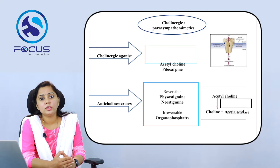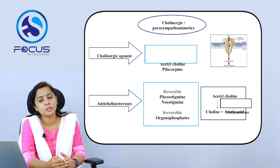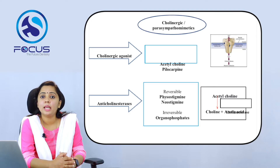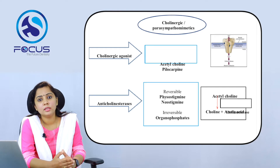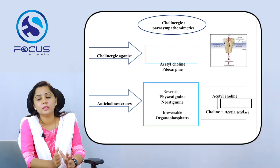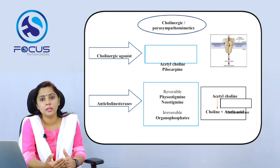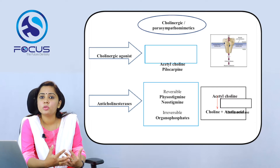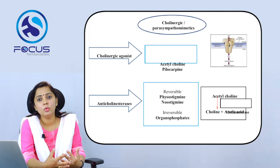The second group is the anticholinesterases. Anticholinesterases inhibit the action of the cholinesterase enzyme — the enzyme which breaks down acetylcholine into choline and acetic acid. Once the cholinesterase enzyme is inhibited, acetylcholine remains available for action. There are two types: reversible and irreversible. Reversible ones include physostigmine and neostigmine, and the irreversible ones are organophosphates. Organophosphates are irreversible because once they bind with the cholinesterase enzyme, the covalent bond formed is permanent and cannot be reversed. As a result, the toxic effects of organophosphate poisoning are due to the excess action of acetylcholine.